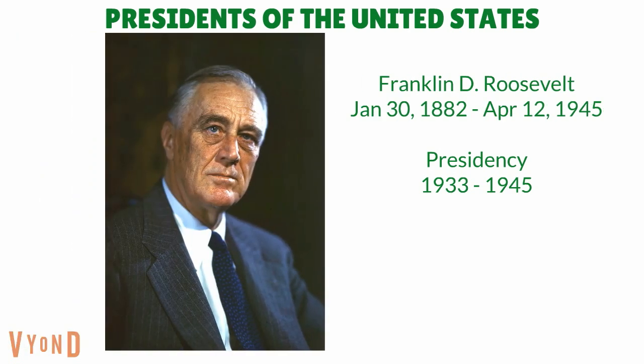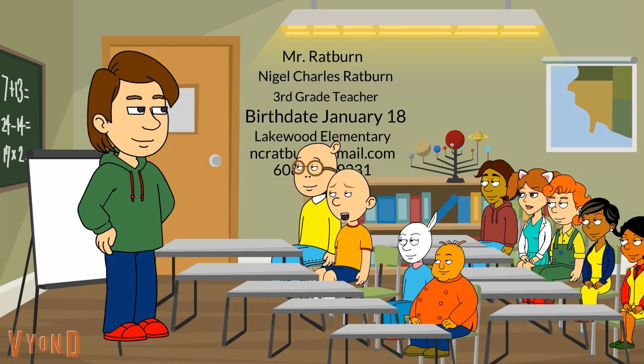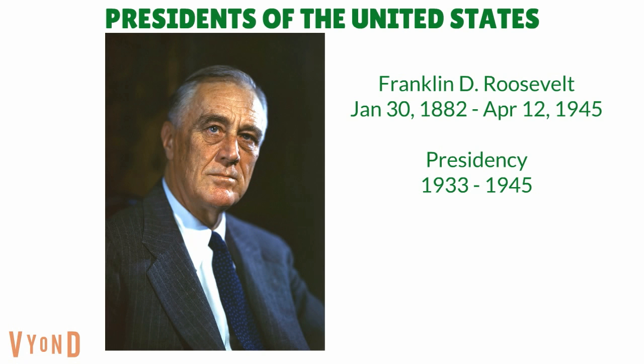Franklin Delano Roosevelt, also known as FDR, was our thirty-second president of the United States. He was born on January 30th, 1882. He was a president from 1933 to 1945. He was the only president to be president for twelve years. He got re-elected in 1936, 1940, and 1944 — he won the election four times and was the only president to do that. His second term began in 1937, his third in 1941, and his fourth in 1945. I know his fourth term began in 1945, but why did his presidency end in 1945? On March 29th, 1945, Roosevelt went to the Little White House in Warm Springs, Georgia. On April 12th, 1945, he woke up with a headache. That afternoon, he died after twelve years of being president.